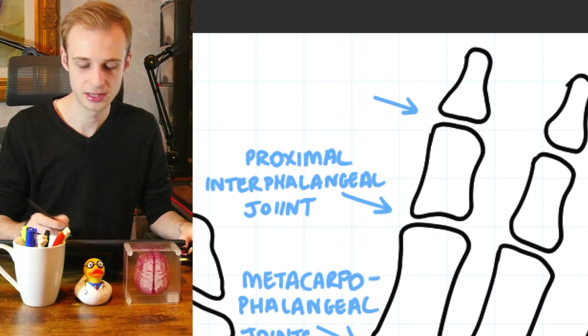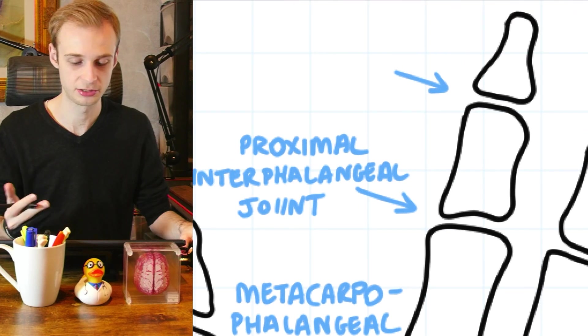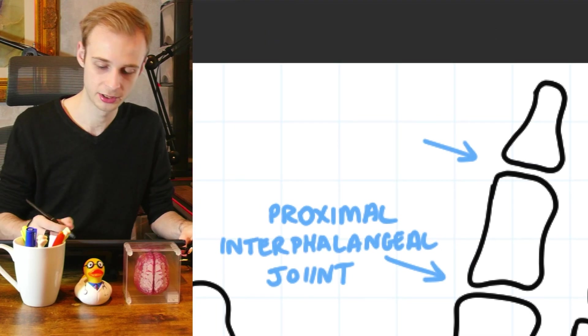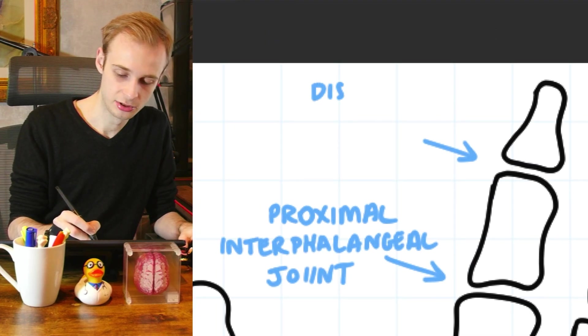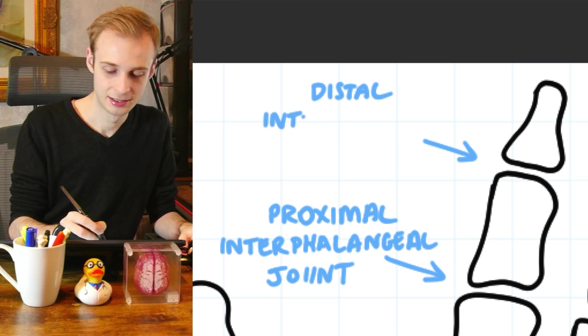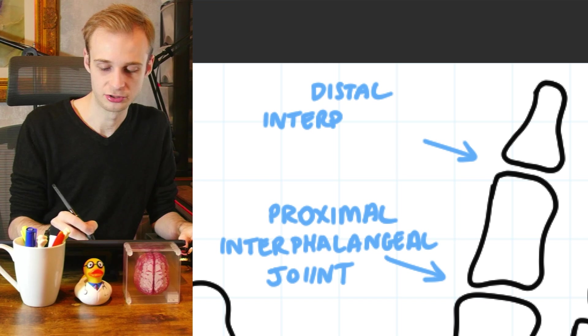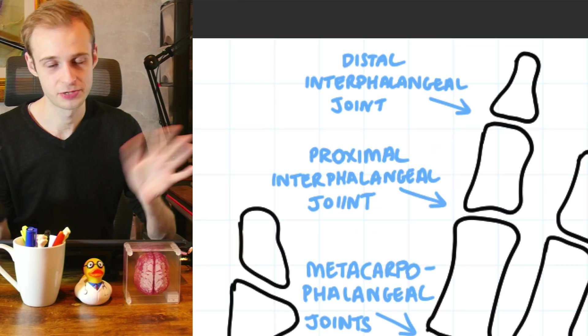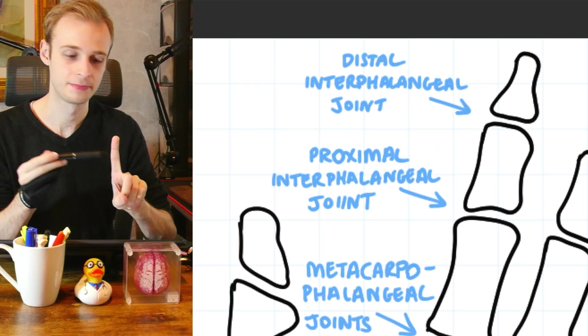And as I'm sure you can imagine, the more distal one is called the distal interphalangeal joint. And in practice, as you will imagine, these are often shortened to PIPs and DIPs.